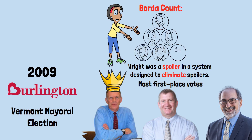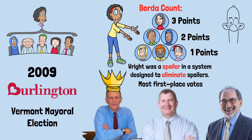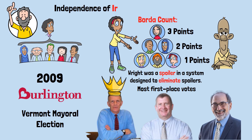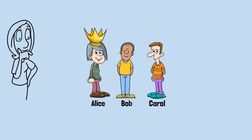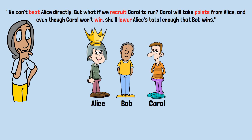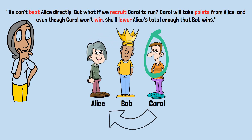Borda count: everyone ranks all candidates, first place gets three points, second gets two, third gets one, and highest total wins. This seems fair — it considers everyone's full ranking. Which criterion does it violate? Independence of irrelevant alternatives, spectacularly. Say Alice is winning; Bob's campaign manager realizes they can't beat Alice directly, but what if they recruit Carol to run? Carol will take points from Alice, and even though Carol won't win, she'll lower Alice's total enough that Bob wins. The presence of a candidate with no chance of winning can completely change who wins among the real contenders. Strategic candidate entry can manipulate the outcome.